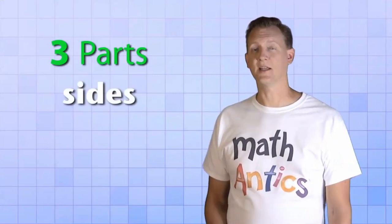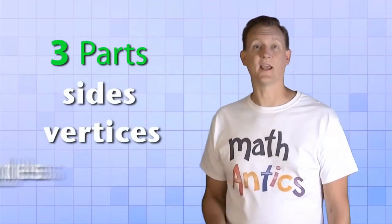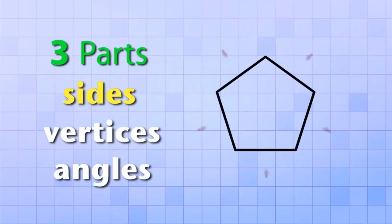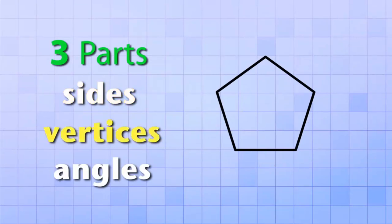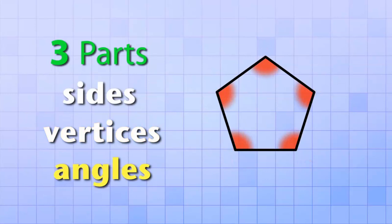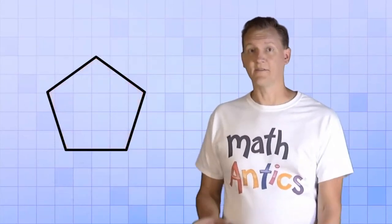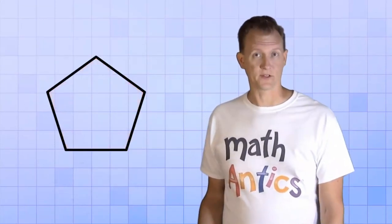First we need to know the three parts that make up all polygons: sides, vertices, and angles. The sides are the straight line segments that make up a polygon. The vertices are the points where the sides intersect, and the angles are formed by the intersecting lines. In Greek, the word polygon literally means 'many angles.' So all polygons have sides, vertices, and angles.